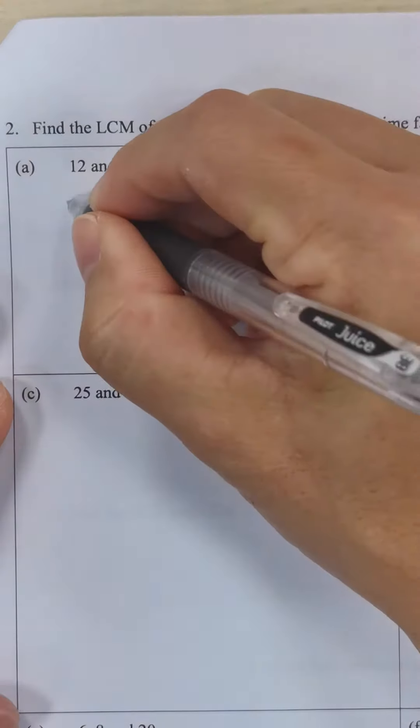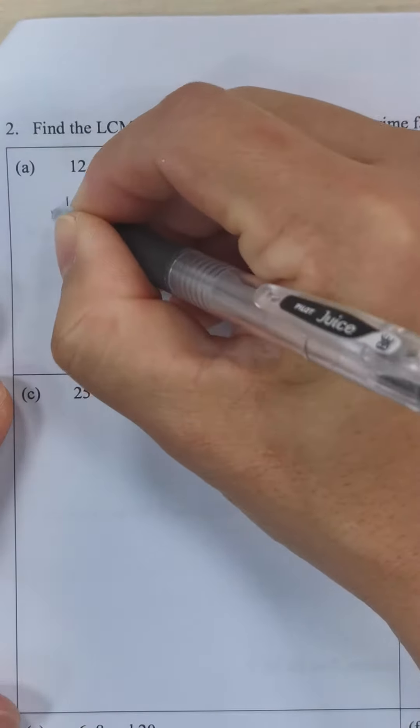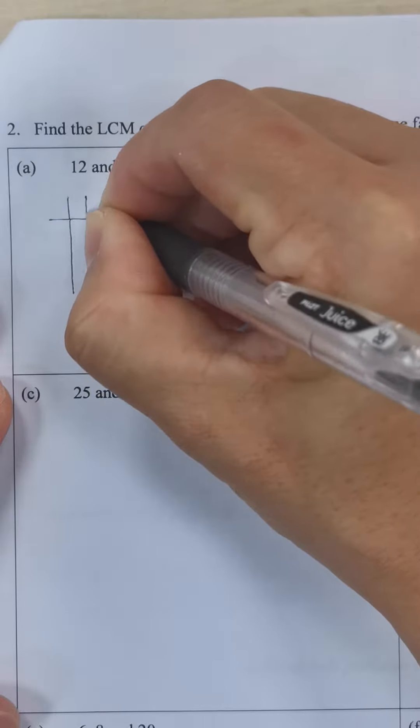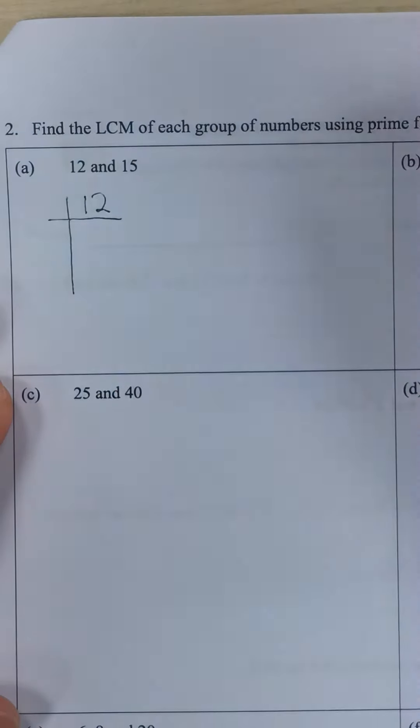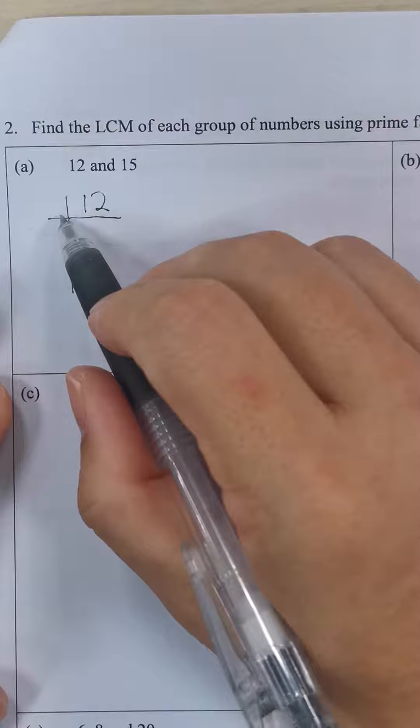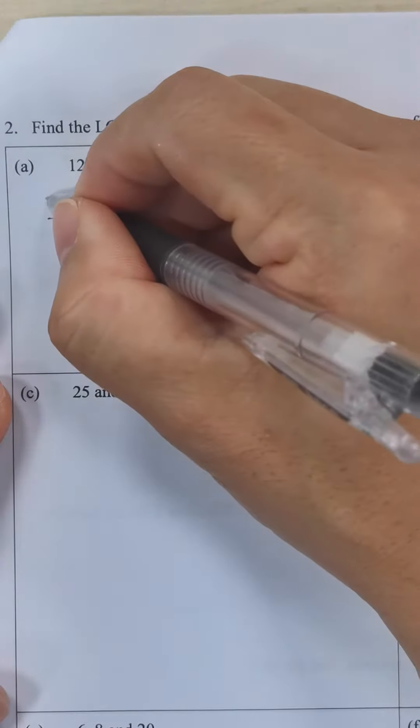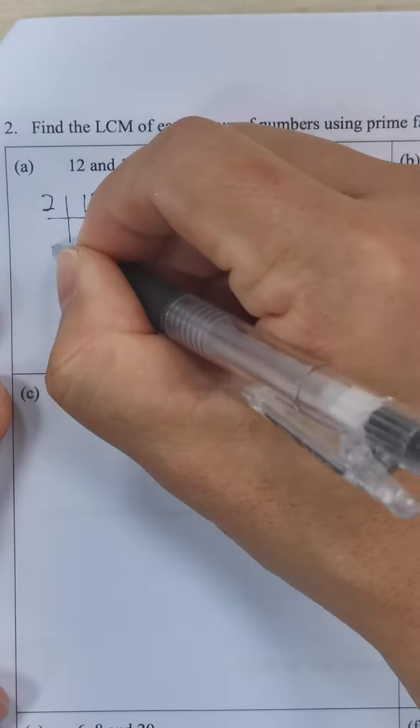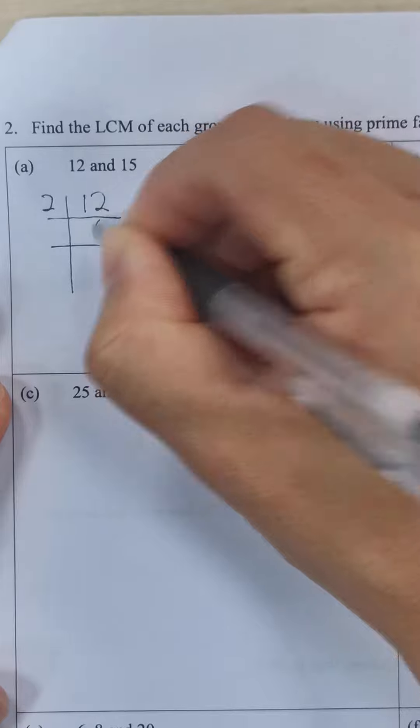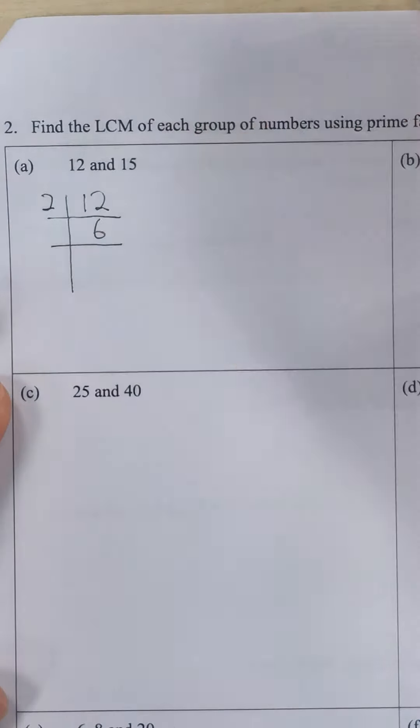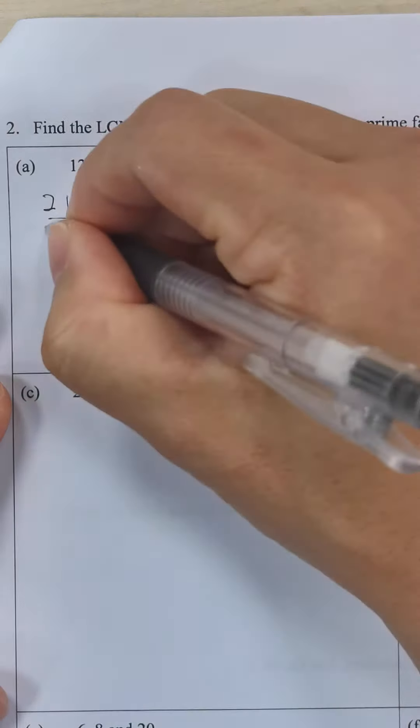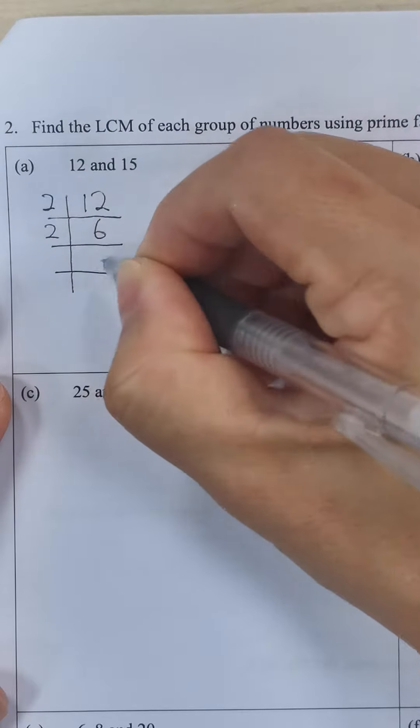To find the LCM, first of all we do prime factorization. Just recall, we take the lowest prime number which is 2. 12 divided by 2, we have 6. The next lowest prime factor, 2 again, we're left with 3.